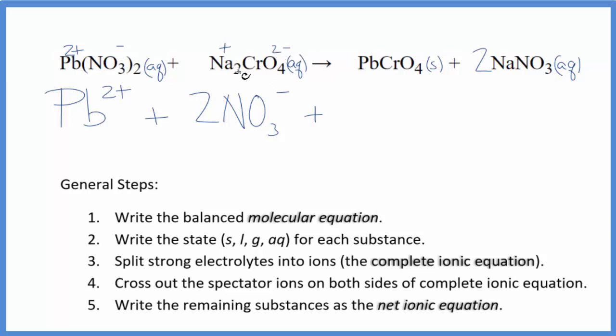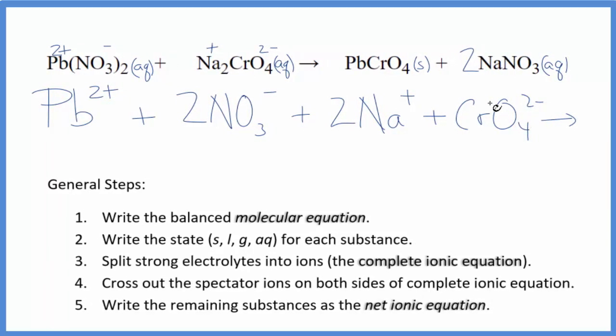So 2 sodium ions. And then the chromate ion. The CrO4 2-. So these are the reactants in our net ionic equation.